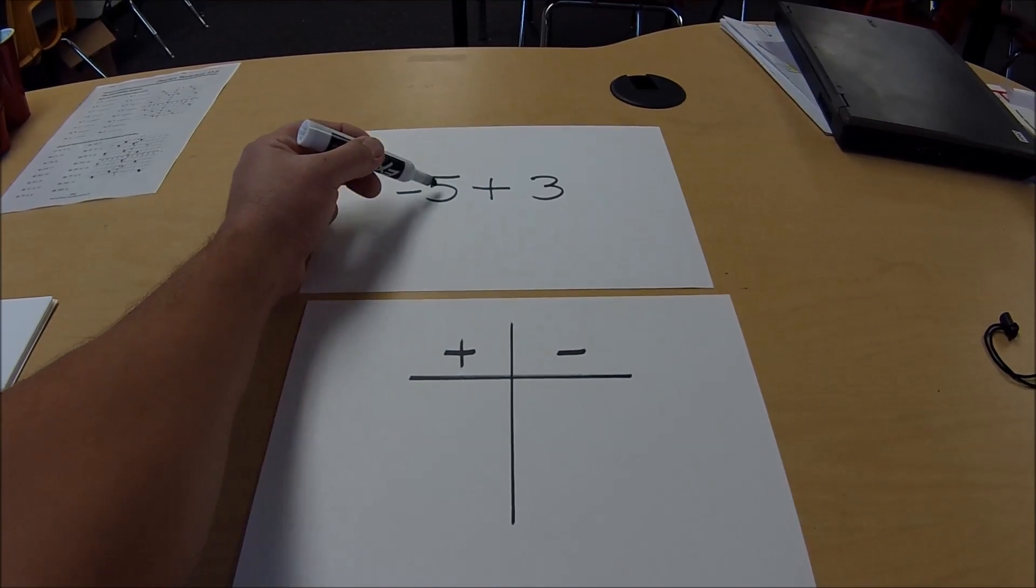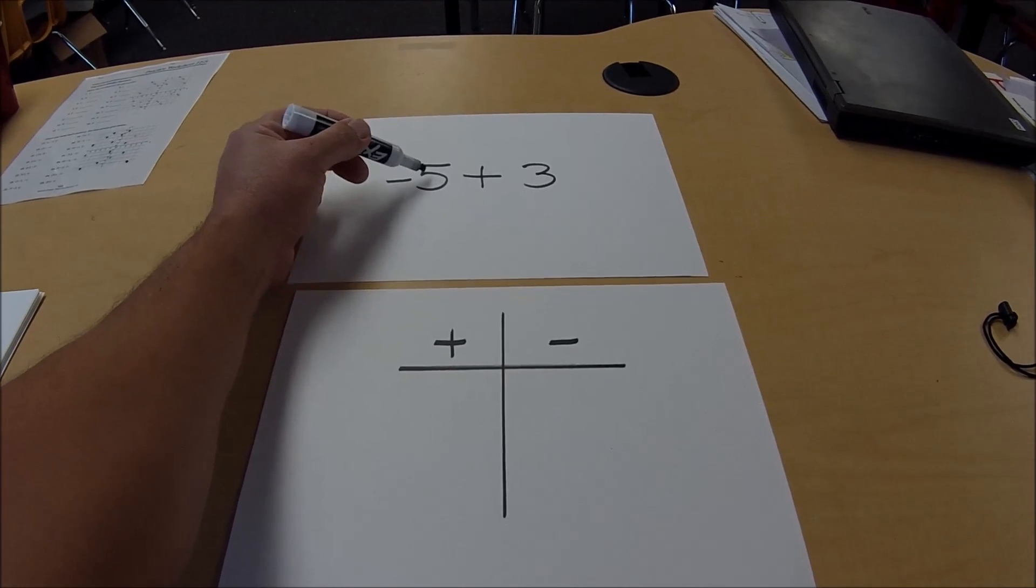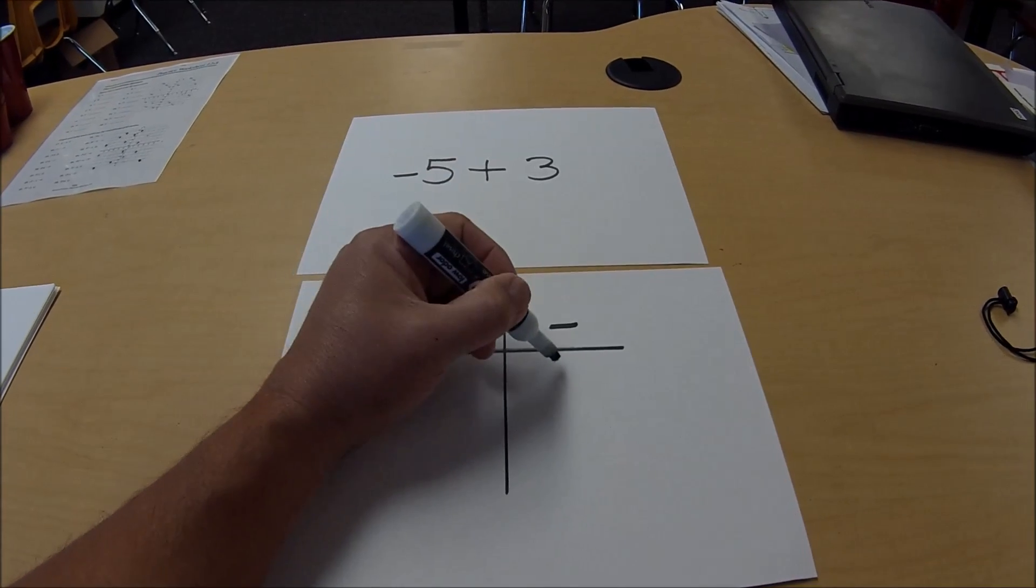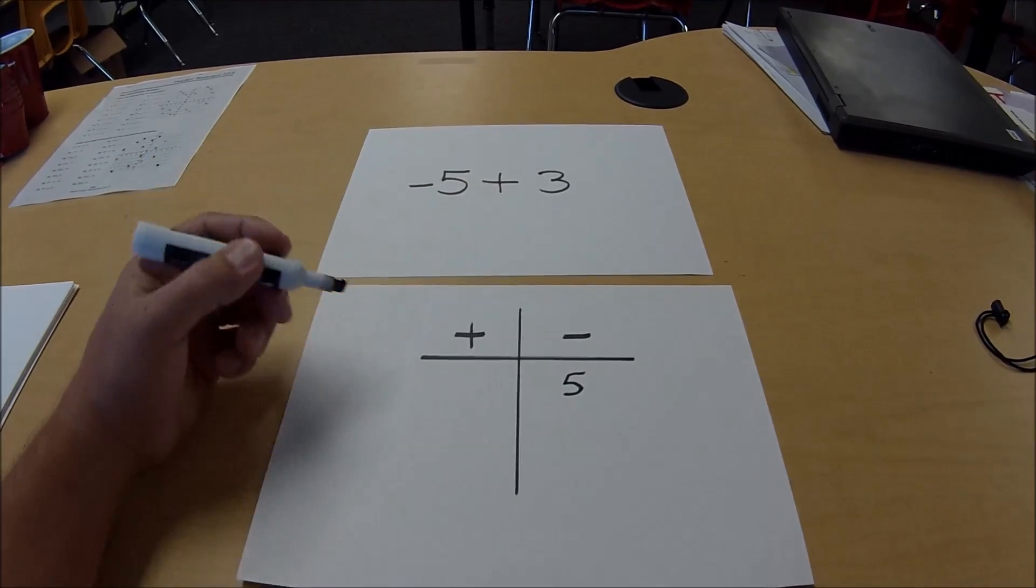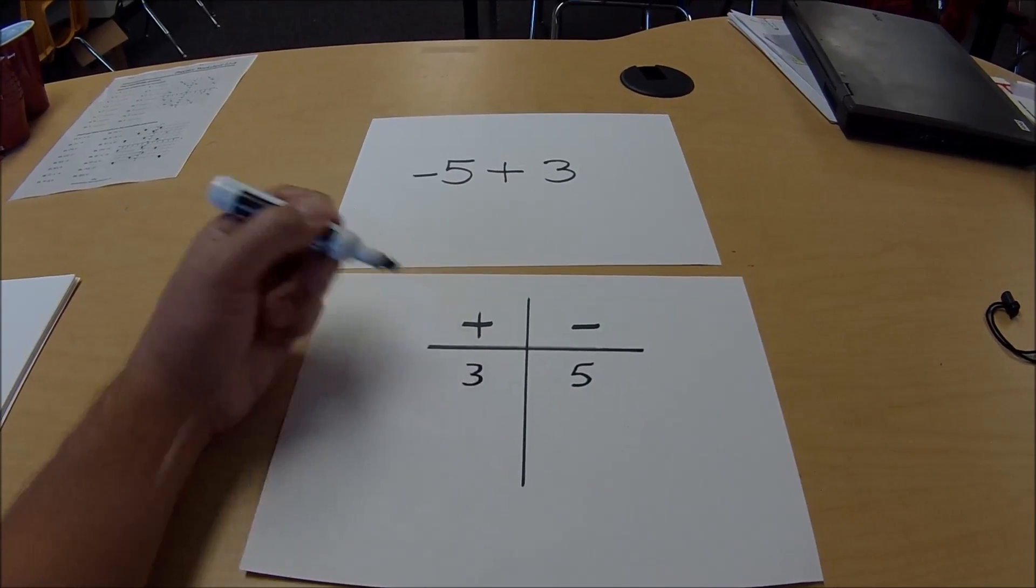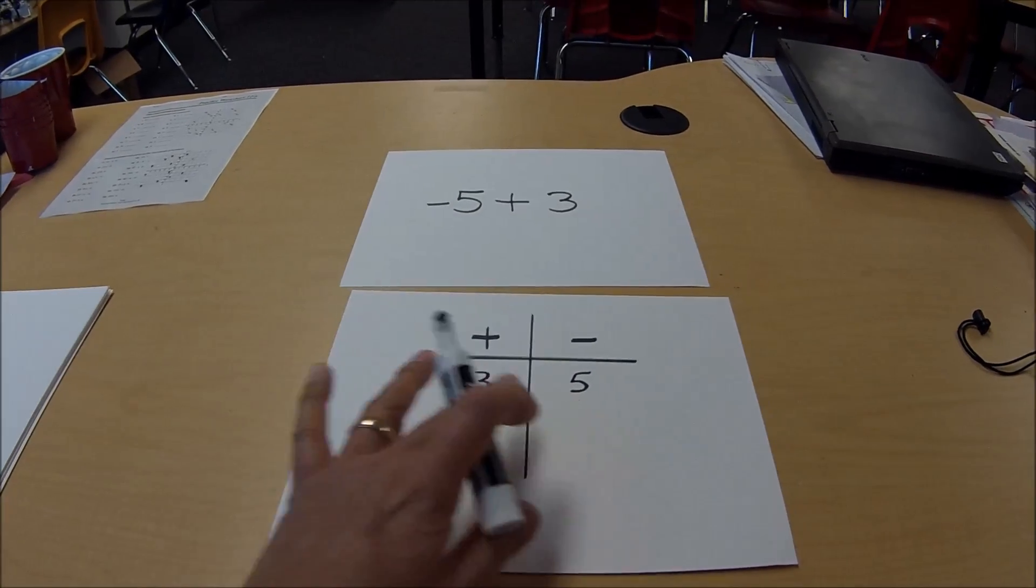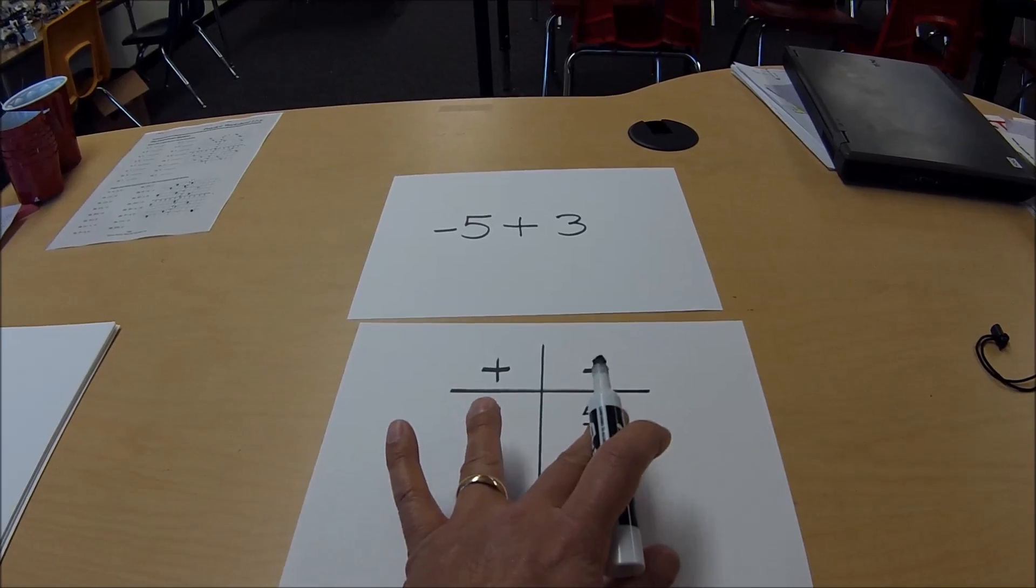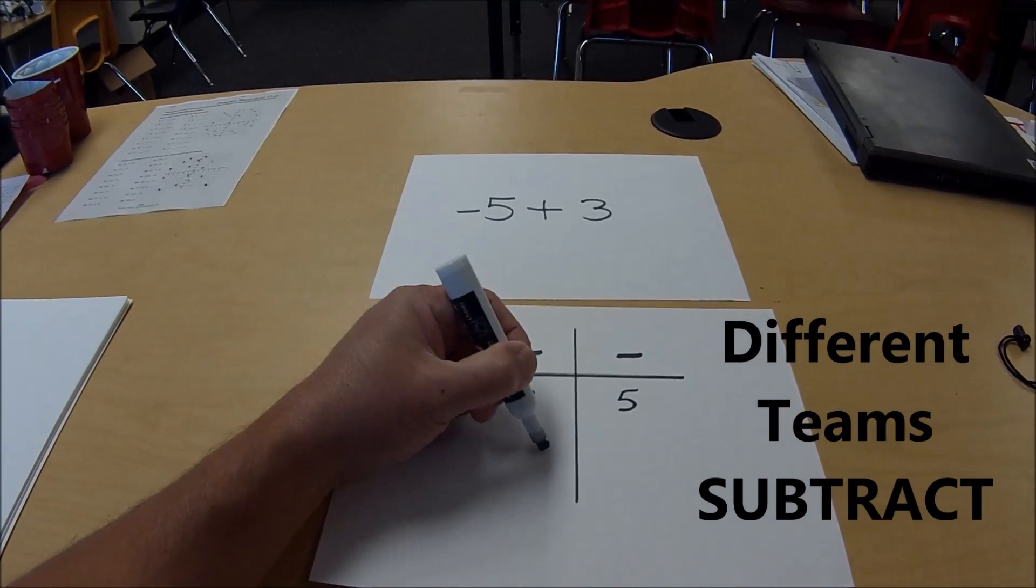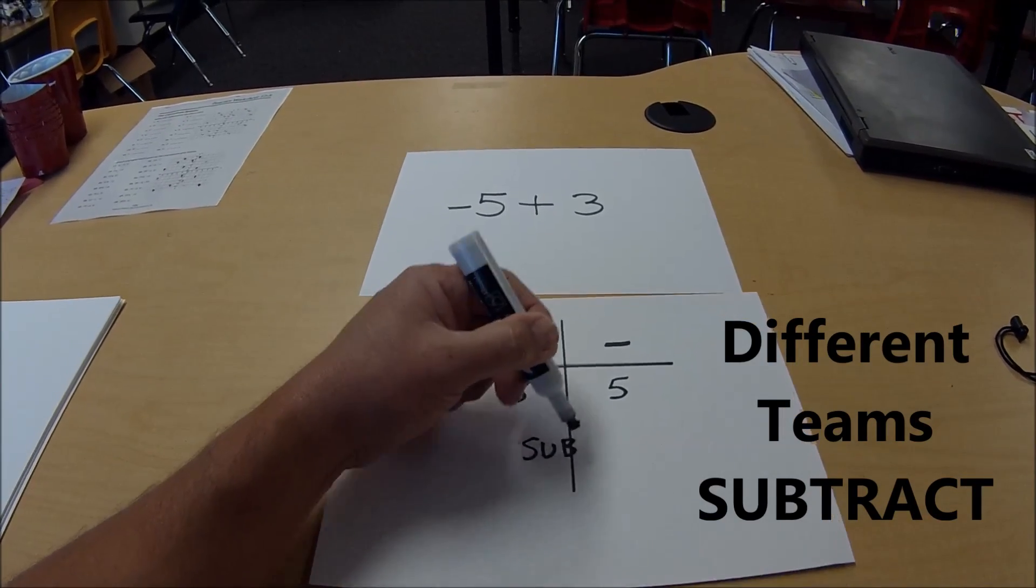So what we want to do is because the negative 5, the 5 is negative, we're going to put that over here. And because the 3 is positive, we're going to put that on this side. So what I tell them to do is one of the rules is if they are on different teams, to subtract.